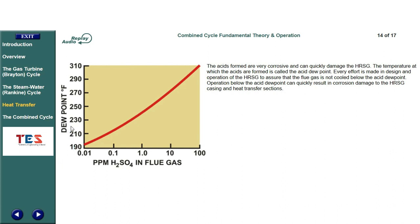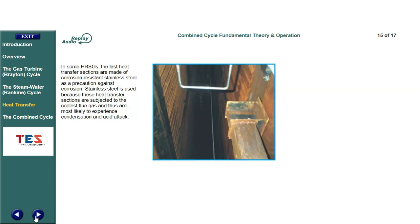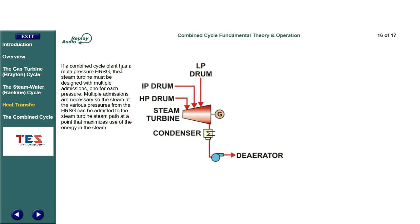The temperature at which the acids are formed is called the acid dew point. Every effort is made in the design and operation of the HRSG to assure that the flue gas is not cooled below the acid dew point, as operation below it can quickly result in corrosion damage to the HRSG casing and heat transfer sections. In some HRSGs, the last heat transfer sections are made of corrosion-resistant stainless steel as a precaution, since these sections are subjected to the coolest flue gas and are most likely to experience condensation and acid attack.